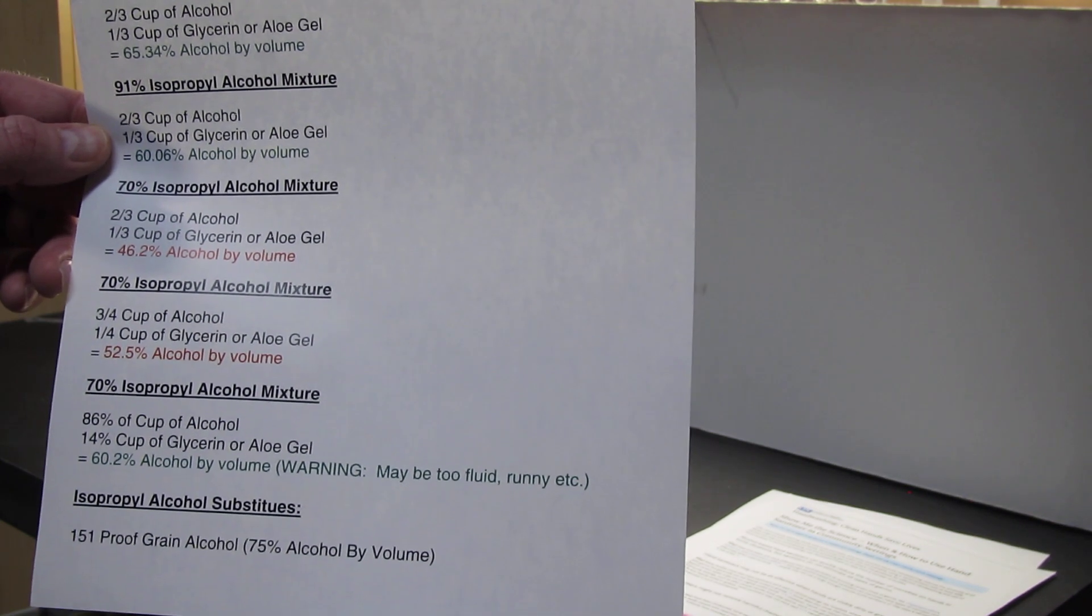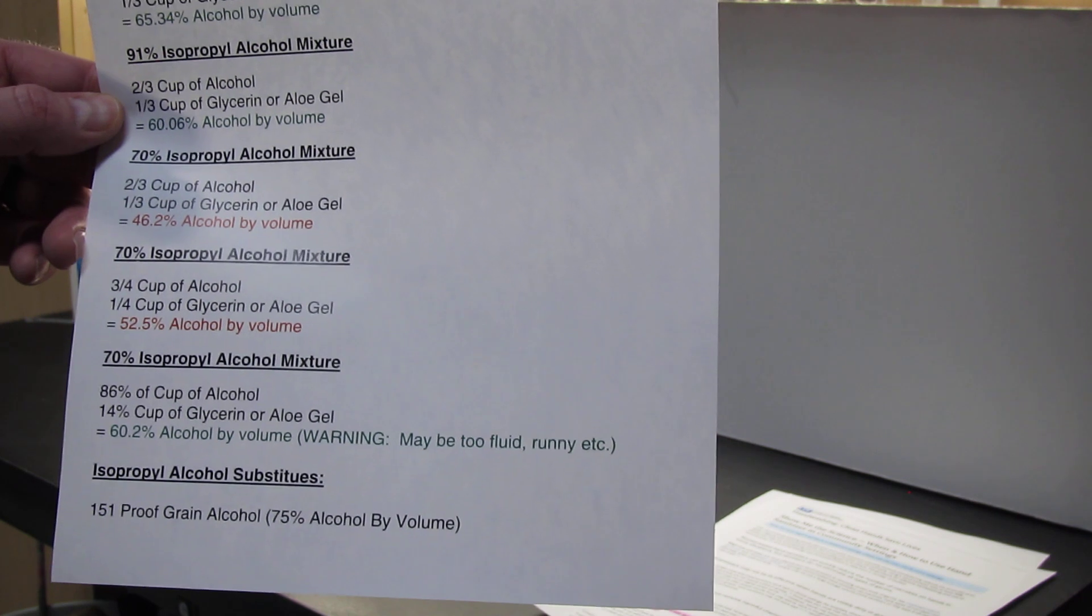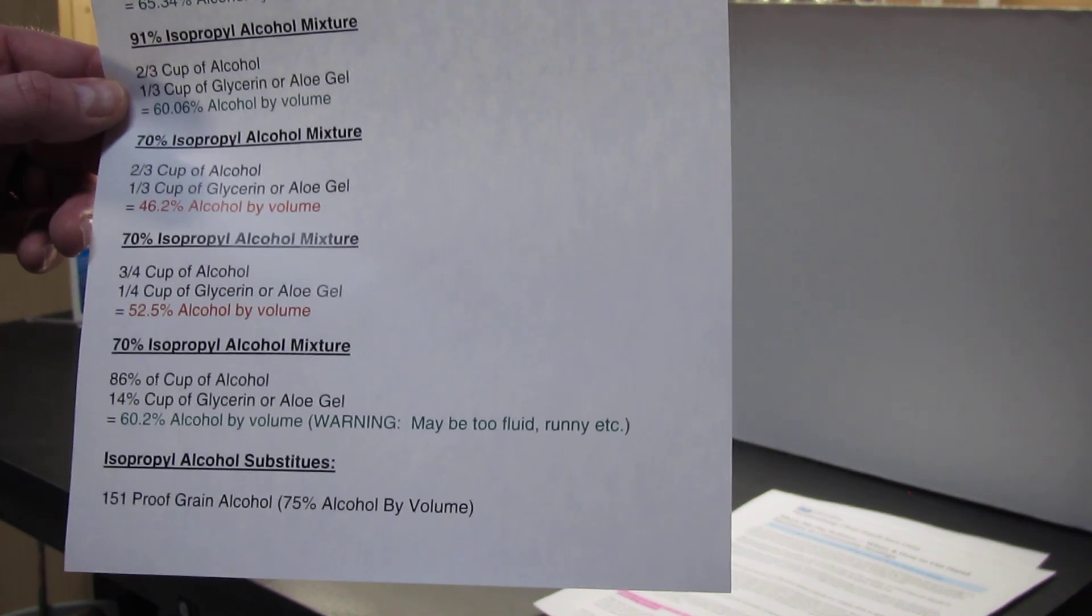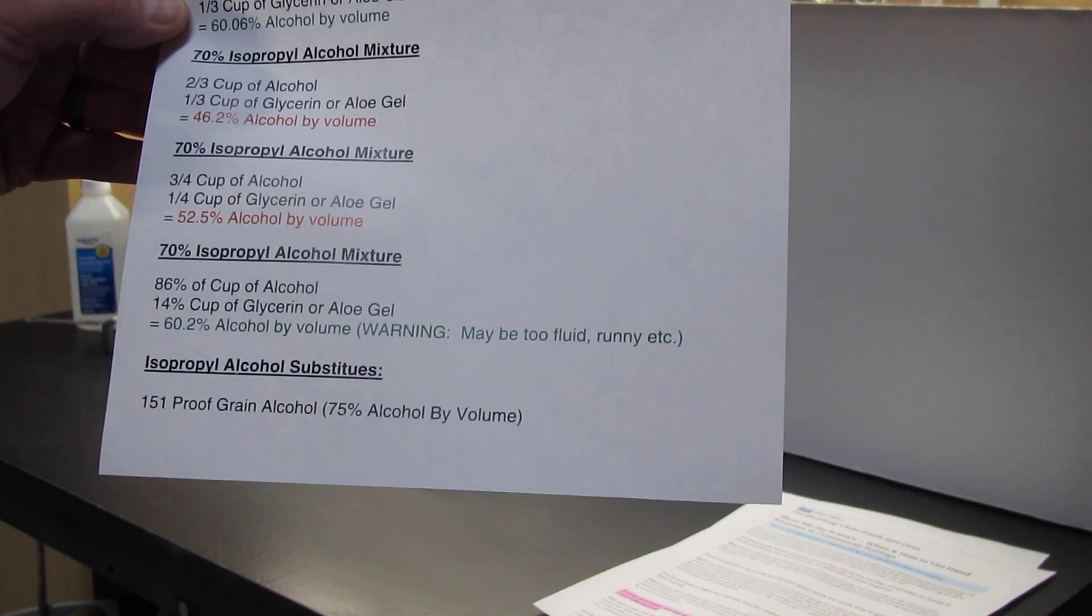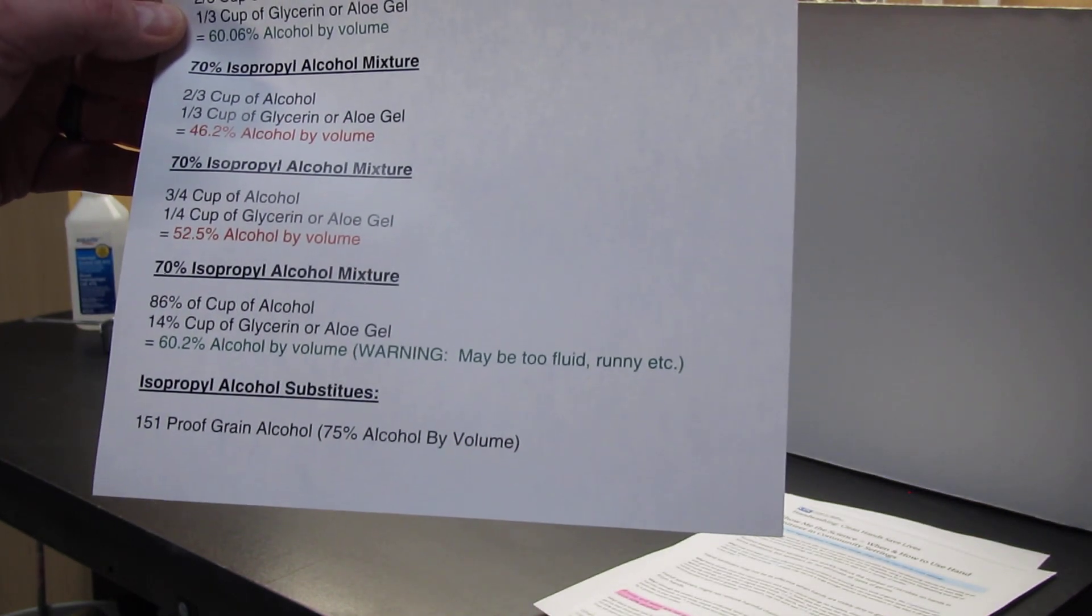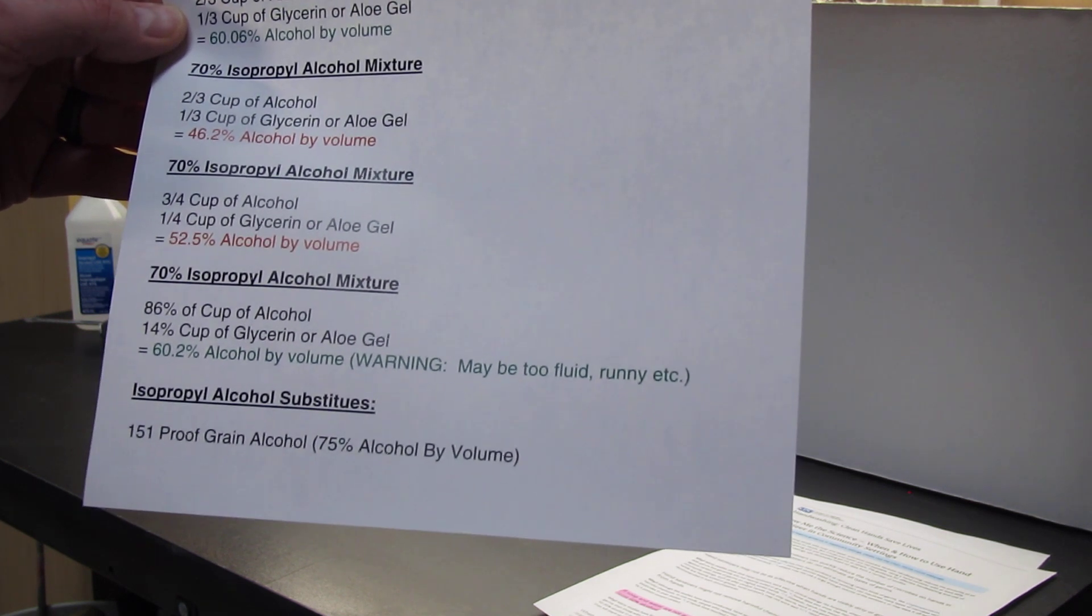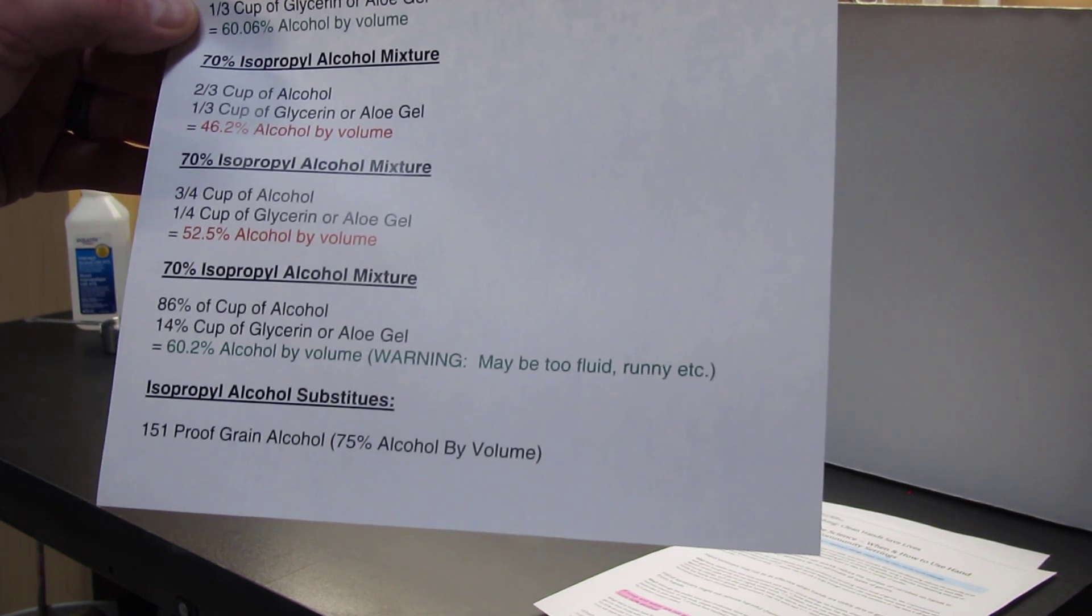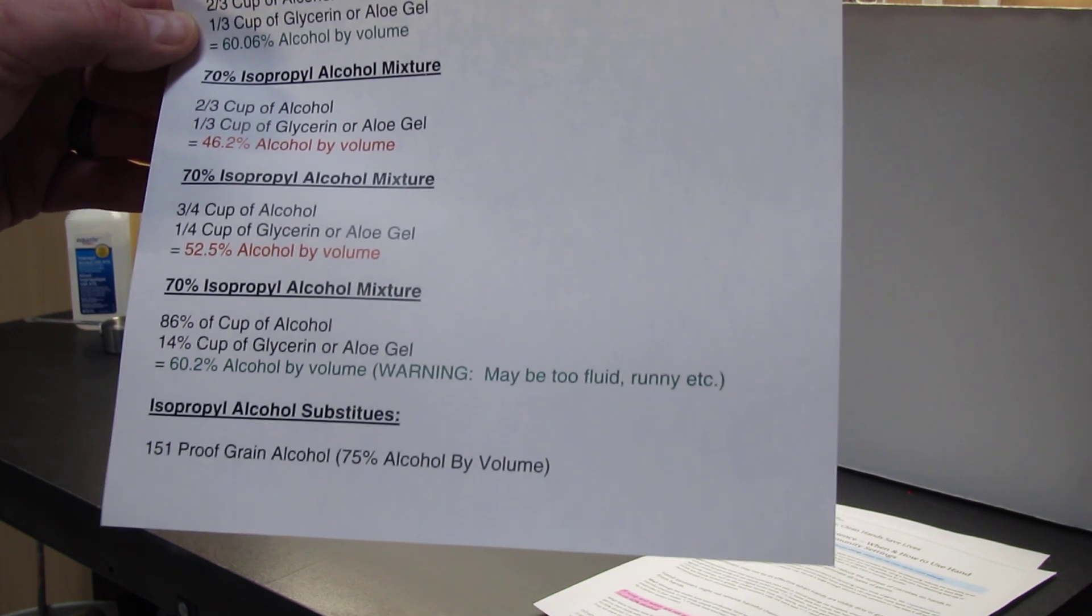So I even did a calculation just to prove this. If you had 70% isopropyl alcohol, use two-thirds of a cup and a third a cup of glycerin or aloe gel, you're going to end up with 46.2% alcohol by volume, which is not enough to kill most bacteria, germs, viruses per the CDC.